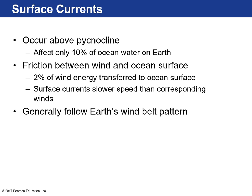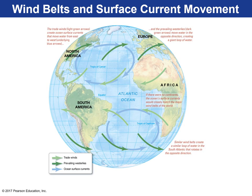Ocean surface currents generally follow the Earth's wind belt pattern — that's why we talk about air-sea interaction before ocean circulation. These green lines are the prevailing winds as a result of atmospheric circulation. These are the trade winds that blow from east to west, and they curve because of the Coriolis effect. Up here we have the westerlies at higher latitudes, blowing from west to east — in the northern hemisphere, deflected to the right.